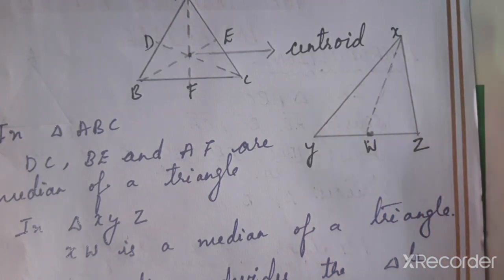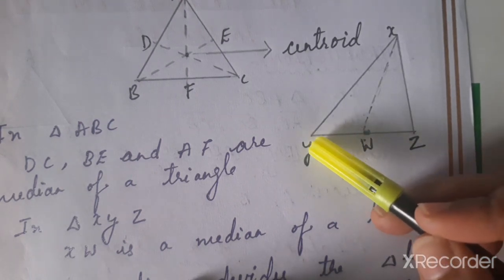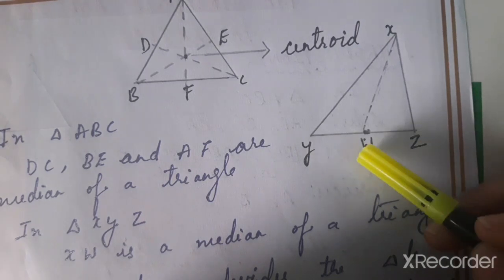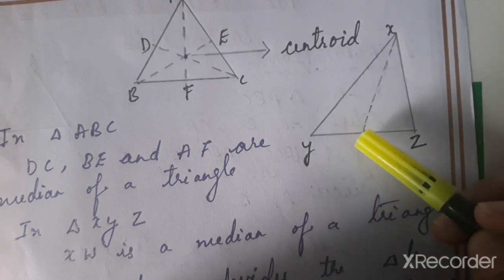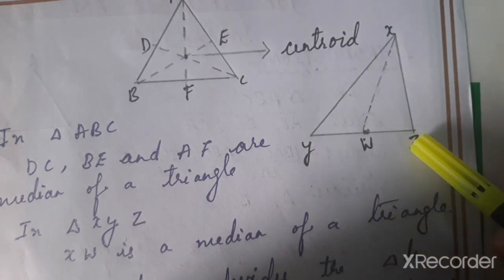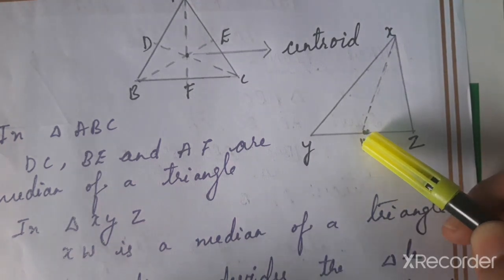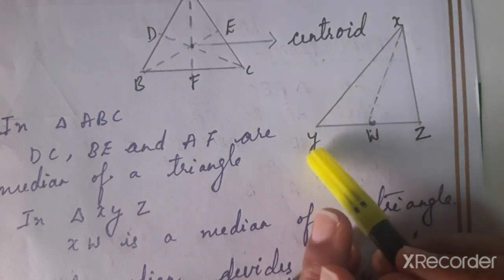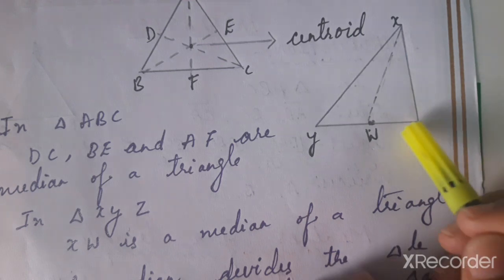Now here is another triangle that is not equilateral. XW is a median of triangle XYZ because W is the midpoint of side YZ. W is the middle point, so YW and WZ are equal. For example, if YZ is six centimeters, then YW is three centimeters and WZ is three centimeters. A median always divides the opposite side into two equal parts.